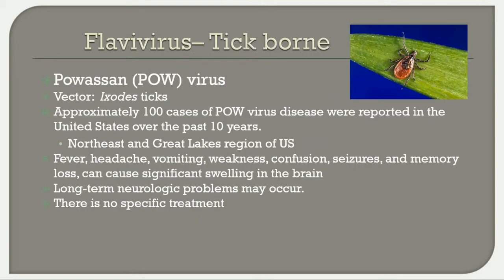Powassan fever is a tick-borne flavivirus. Only about 100 cases have occurred across the US in the last 10 years, concentrated in the Northeast and Great Lakes region. Symptoms include fever, headache, vomiting, weakness, confusion, seizures, and memory loss; it can cause significant brain swelling and most people experience long-term neurologic problems. There is no specific treatment.